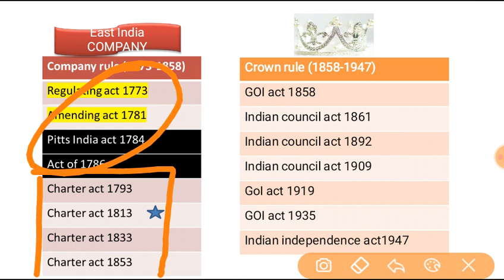As you can see, the Charter Acts are spaced 20 years apart. 1793 plus 20 is 1813, plus 20 is 1833, plus 20 is 1853. This is why the British Parliament passed this Act every 20 years — it gave an extension to the East India Company. This Act was passed from the British Parliament to regulate the affairs of the East India Company, giving EIC an extension every 20 years.